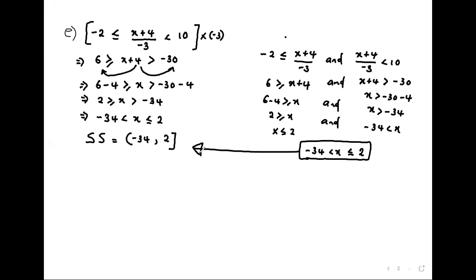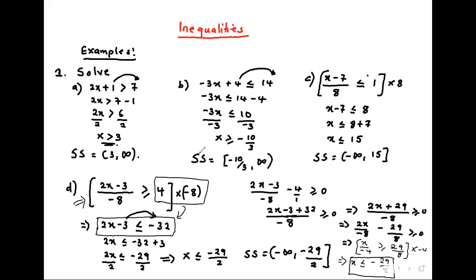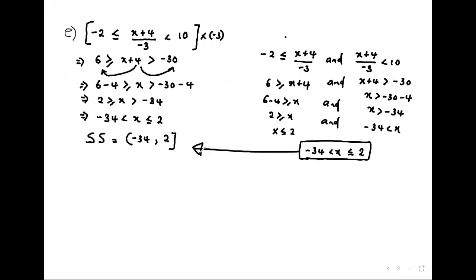A student asks: when you put the solutions together, do you always start with the smallest value? Yes. Another student asks: does the inequality sign always change when you divide or multiply? The teacher clarifies: only when you divide or multiply by a negative number — it must be negative. For example C, multiplying by positive 8 didn't change the inequality. It only changed on D when we encountered a negative.